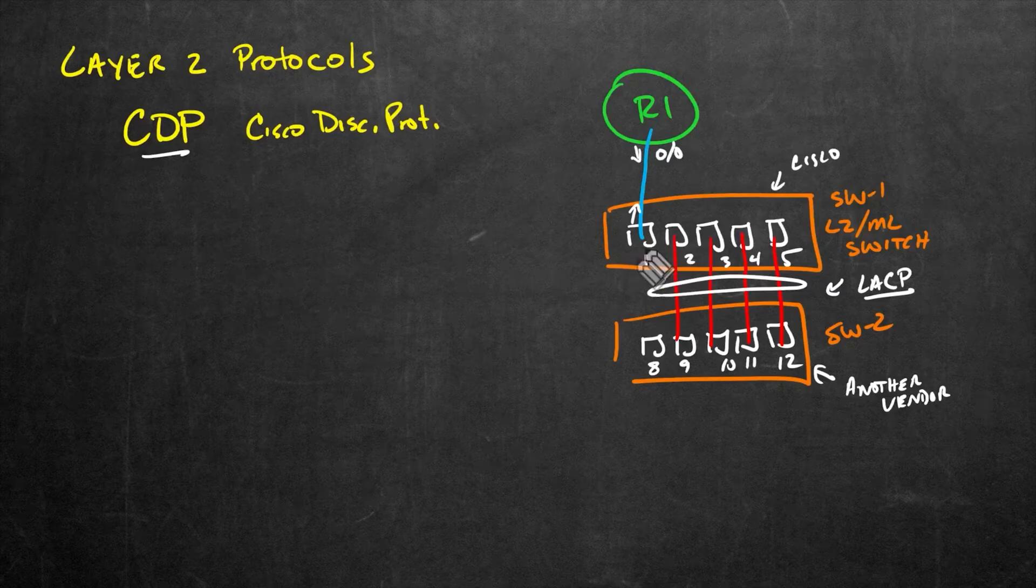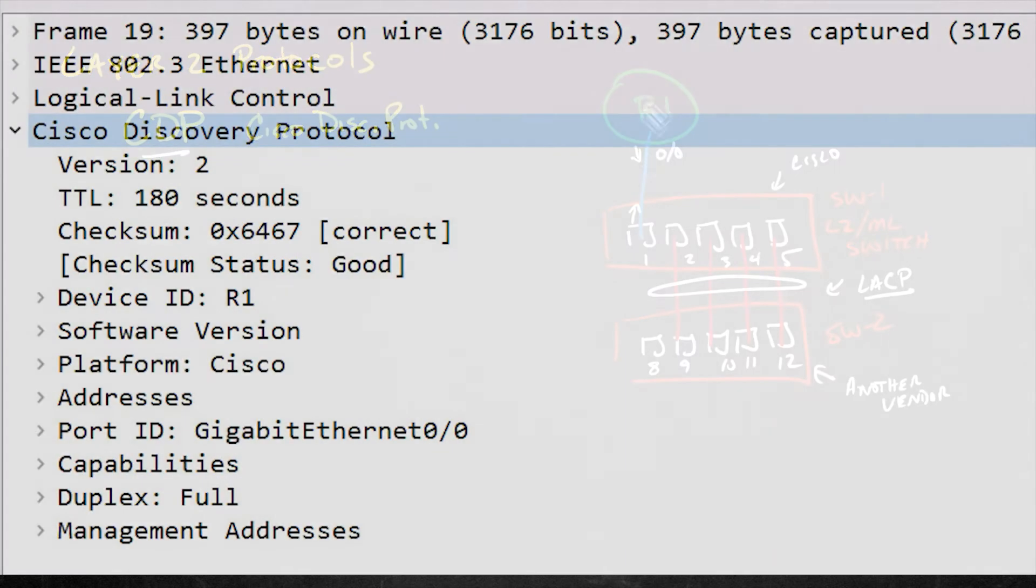And so the switch would know here on my local interface number one, I'm receiving these CDP messages. And in those CDP messages, I'm learning all about router one. I'm learning that router one is sending those messages from its 0/0 interface, I'm learning about this router's name and its management IP address and its capabilities that it can be a router. And all that information is communicated at layer two via this layer two protocol called CDP.